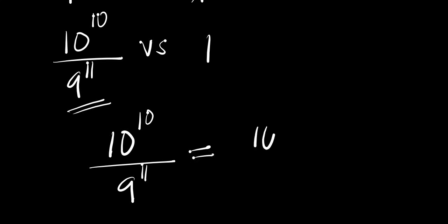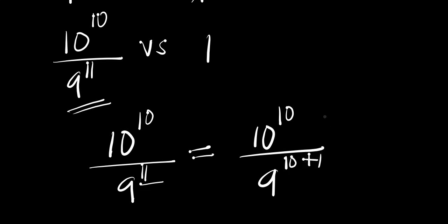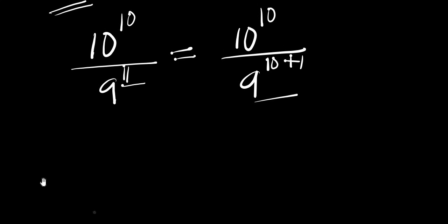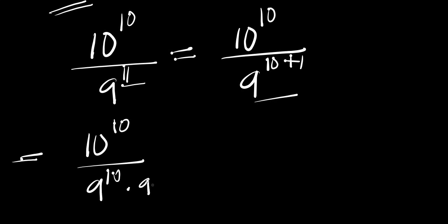We now have 10^10 divided by 9^11. We can rewrite the exponent 11 as 10 plus 1. Remember, if you have a to the power of n plus m, this equals a^n times a^m. Applying this identity gives us 10^10 divided by 9^10 times 9^1.